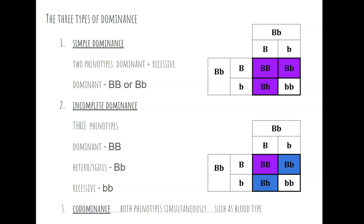Let's talk about what dominance is. When you have two different alleles in a cell for the same gene, which one should you use — the big B allele or the little b allele? The answer depends on the gene. Each gene has its own relationship with how it's expressed. You can liken this to having two recipes for cake: your mom's recipe and your dad's recipe. Some kitchens will only ever make the mom's recipe — that would be simple dominance.